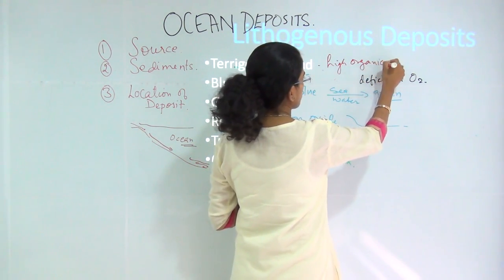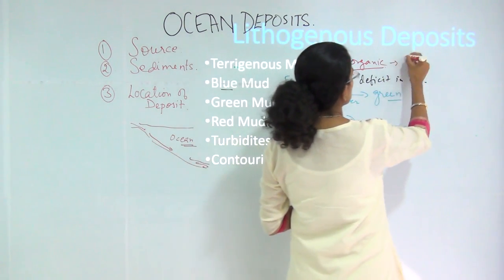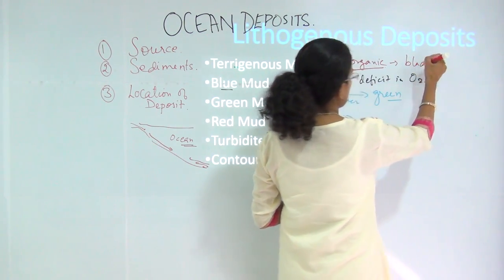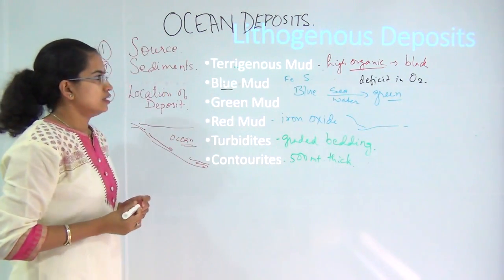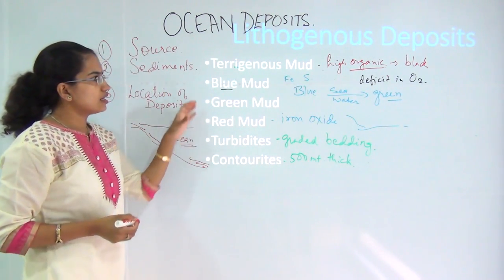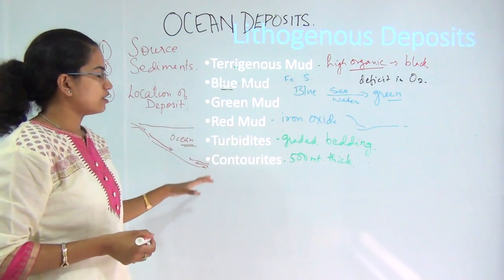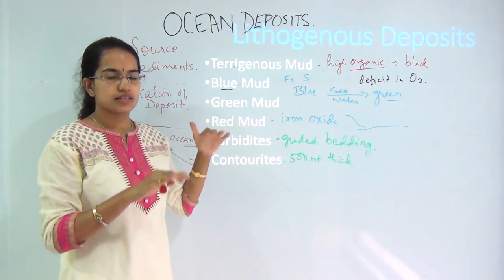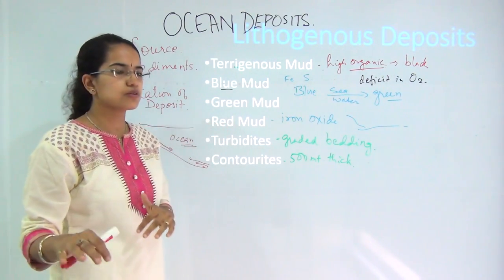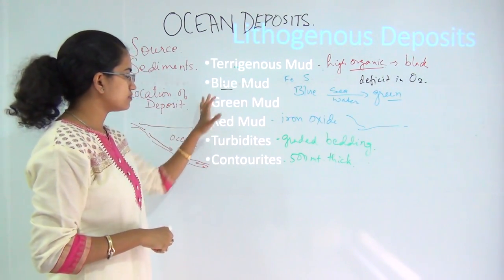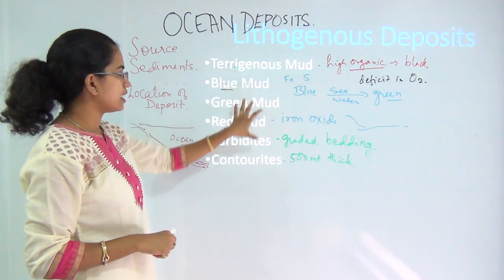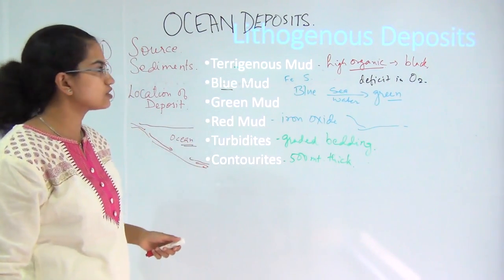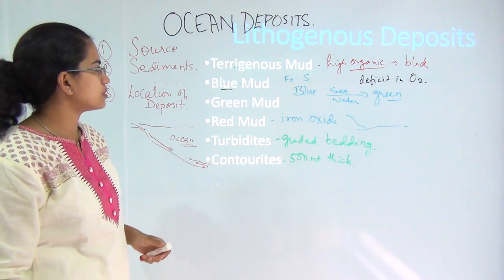Because of the high organic content, terrigenous mud is usually darker — very dark in colour. These are the kinds of deposits that come into the ocean from the land surface, and we have talked about the basic characteristics of these deposits.